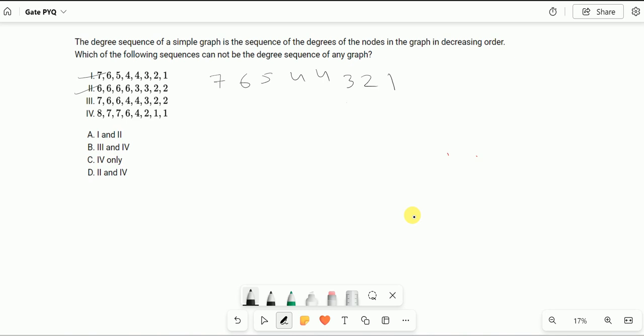We will solve this question using Havel-Hakimi theorem. Havel-Hakimi theorem states that you arrange degrees in decreasing order, which is already done here, and take out the first degree. So I am taking out this 7.